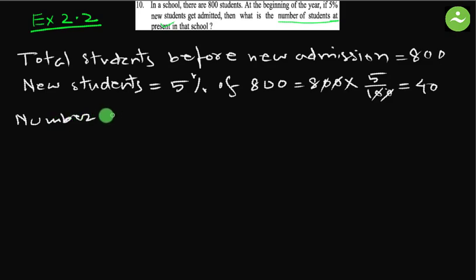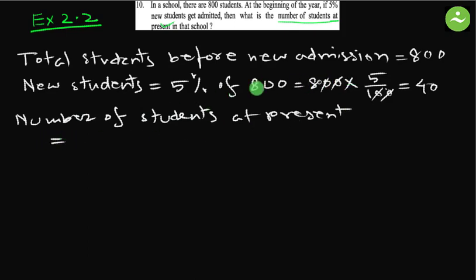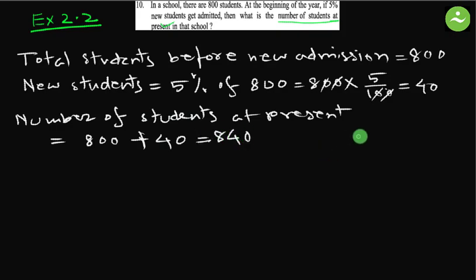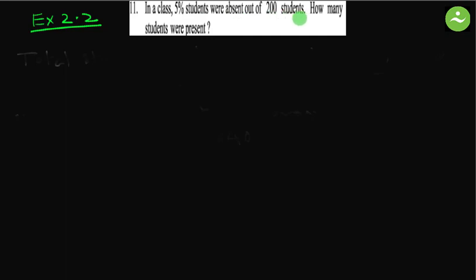Number of students at present equals 800 plus 40, equals 840. That is the answer. Question number 11: in a class, five percent of students were absent out of 200 students. How many students were present? Total students in the class were 200, and five percent of 200 were absent.